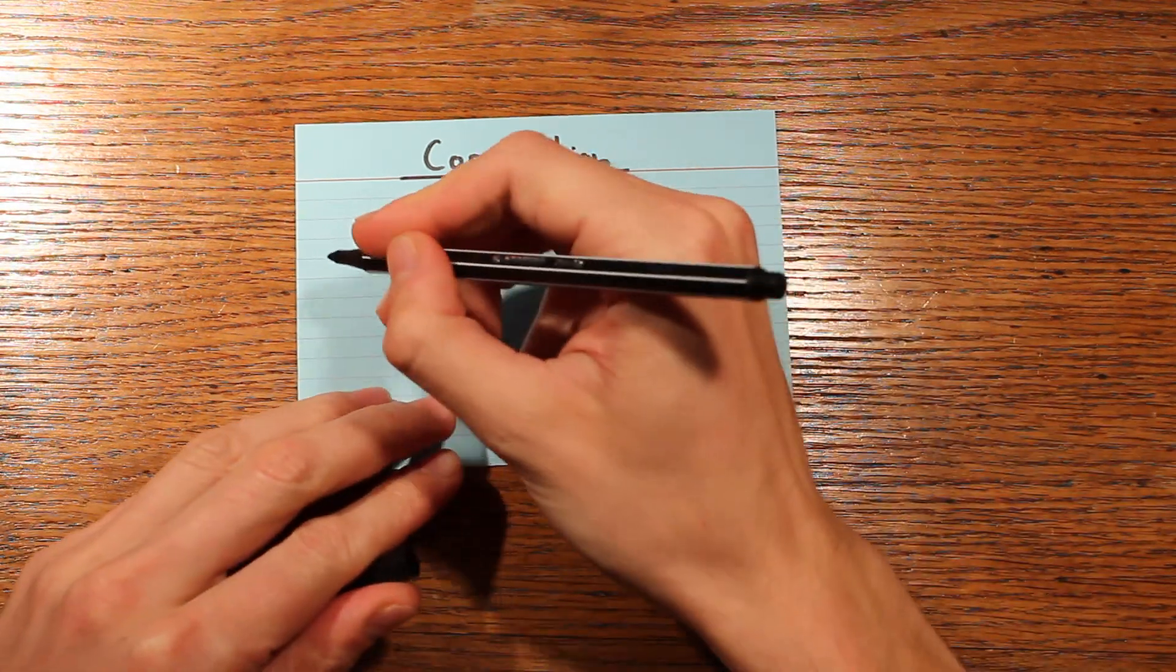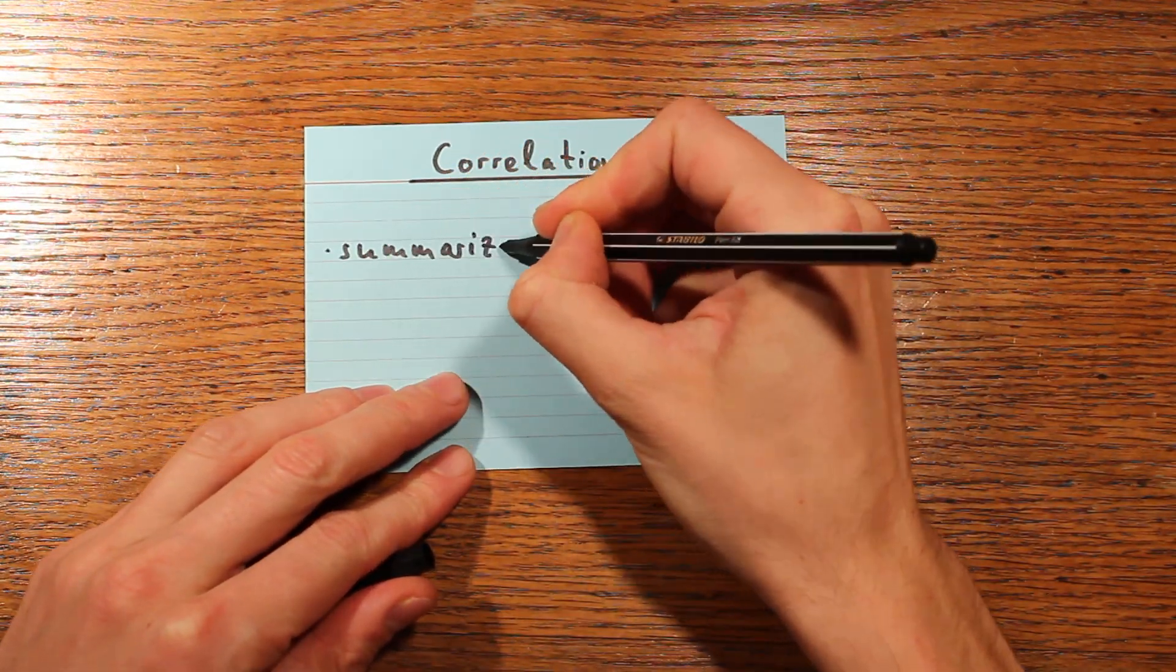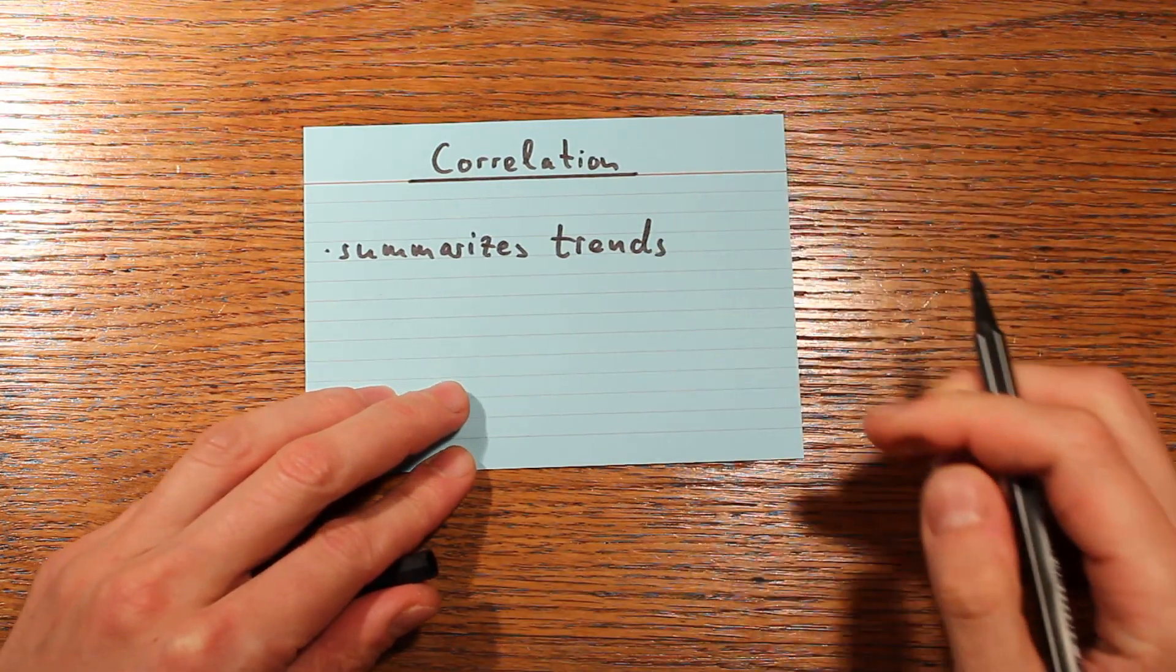Correlation is really just a way of saying that if one thing is large, then another thing tends to be large or small as well. I'll show you an example.